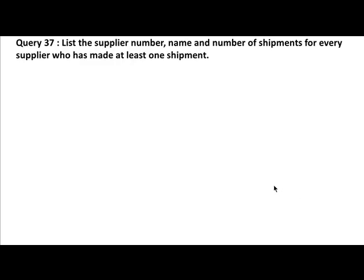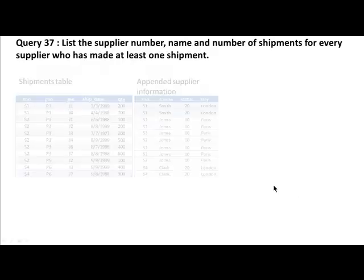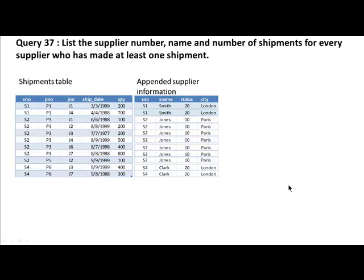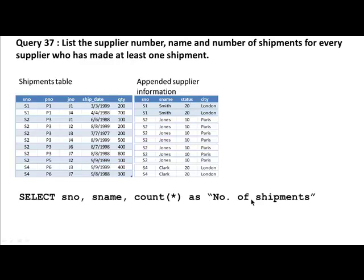Clearly, since we are counting, some kind of aggregate function is now playing a role. We're going to join the two tables — shipments and suppliers — on the supplier number field. S1 has made two shipments, S2 has made seven shipments, and S4 has made two shipments. So we say: SELECT supplier number, supplier name, COUNT(*) AS number_of_shipments.